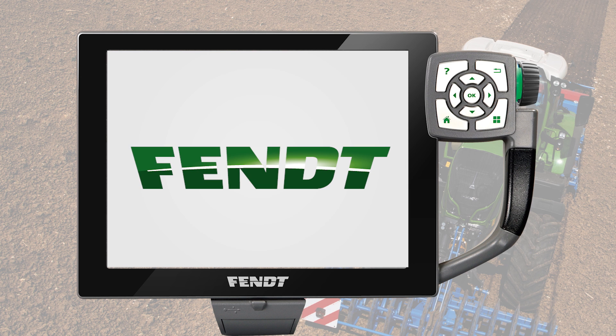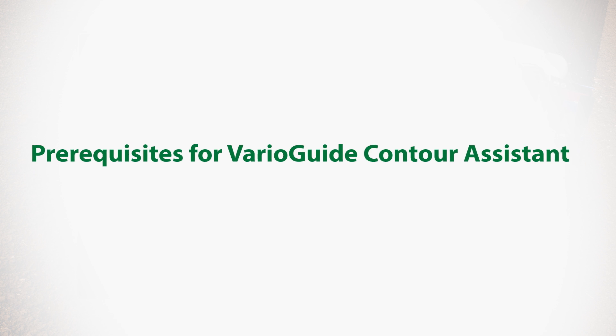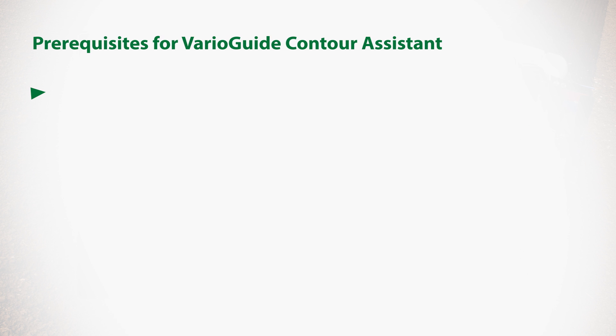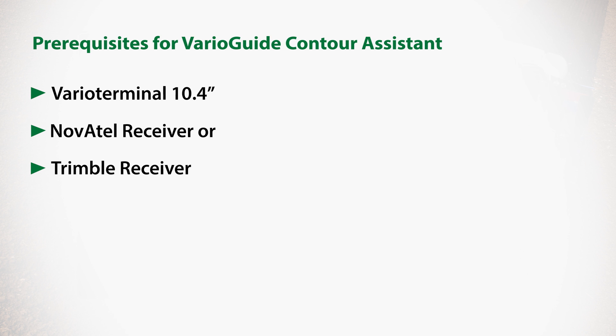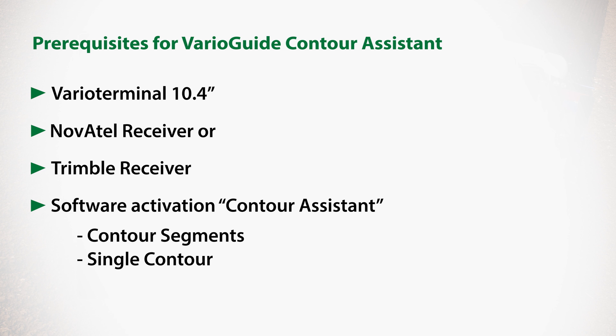The contour assistant feature is an option for the Fendt VarioGuide system. Prerequisites are a VarioTerminal 10.4 and a Novatel or a Trimble receiver. Contour segments, as part of this option, helps you to easily work with various waylines in a field. These waylines are called contour segments and can be recorded by driving. With the latest software version you can create contour segments either based on an existing boundary or on existing waylines.